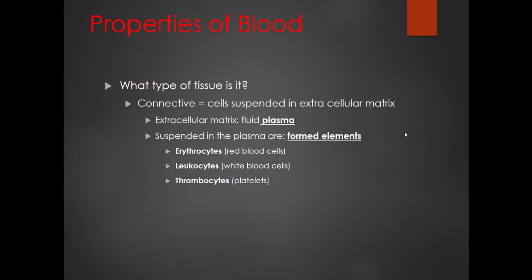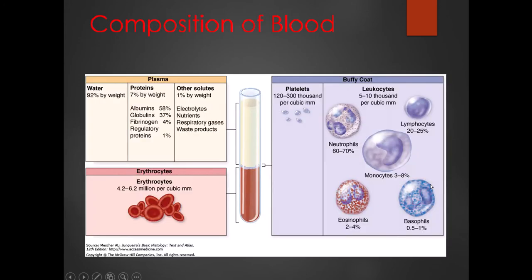Plasma is the fluid part of our blood, and suspended within it are all the different formed elements — things like erythrocytes or red blood cells, leukocytes or white blood cells, and thrombocytes, more commonly called platelets. The plasma portion is mostly water, but we also find plasma proteins such as albumin, which is an osmotic component; fibrinogen, which helps the coagulation process; and globular proteins for transporting lipids and lipid-soluble hormones. You'll also find respiratory gases, nutrients, electrolytes, vitamins, and waste products.